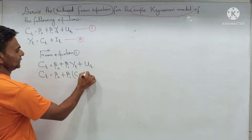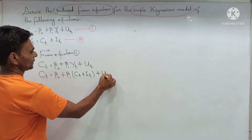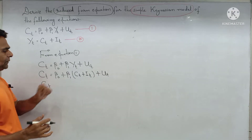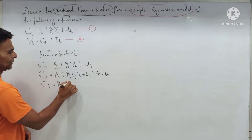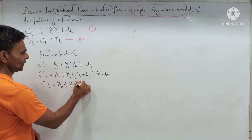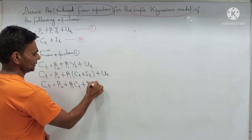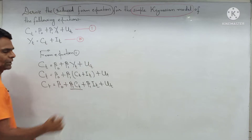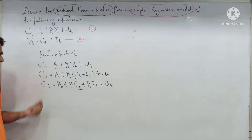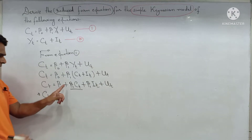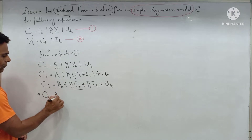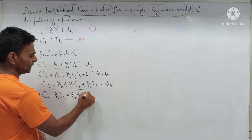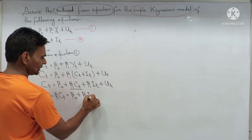Now solve it. First, remove the bracket by multiplying through by beta1. So: Ct = beta0 + beta1*Ct + beta1*It + Ut. Now shift the beta1*Ct term to the left-hand side. When it moves to the LHS, it becomes negative.